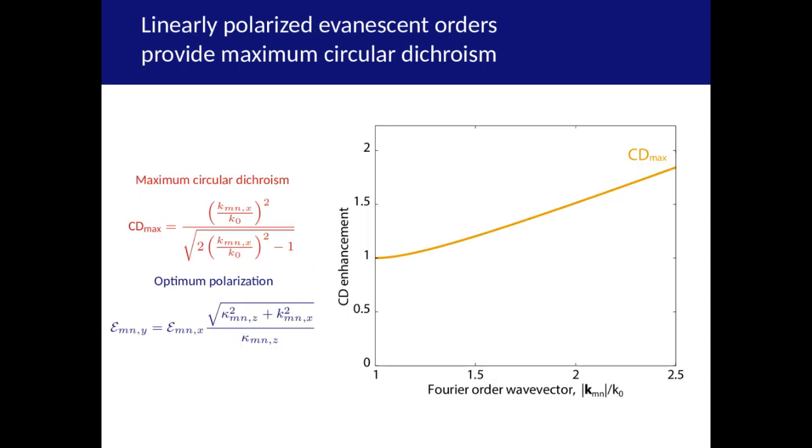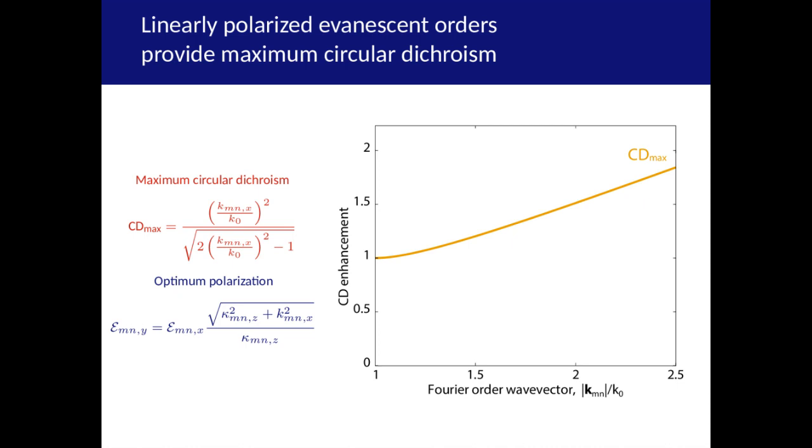So what do we need to do to obtain maximum circular dichroism? We need the right kind of linear polarization in the evanescent orders. And there is an analytic limit on how high CD can get in a given Fourier order, which increases with the wave vector of the order. We performed simulations on many geometries under different wavelengths of illumination. And if we put it all together, they fall nicely under the theoretical limit. And that tells us what we need to maximize CD near a metasurface: excite high Fourier orders, make sure they have the correct linear polarization and we can improve circular dichroism.